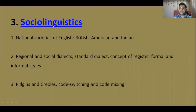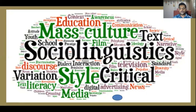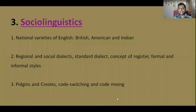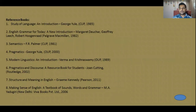The third topic in this syllabus is sociolinguistics — the relationship of society with language and vice versa. Here you will be learning about different varieties, different dialects, and much more. This section covers: national varieties of English — British, American, Indian — regional and social dialects, standard dialects, concept of register, formal and informal styles, and pidgins and creoles, code switching and code mixing.